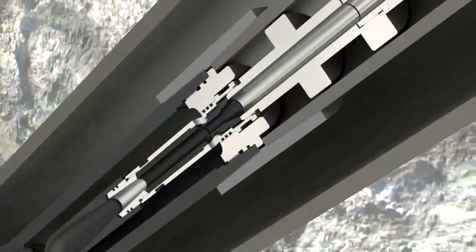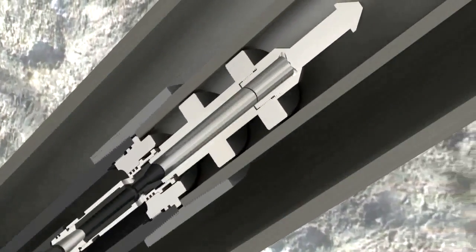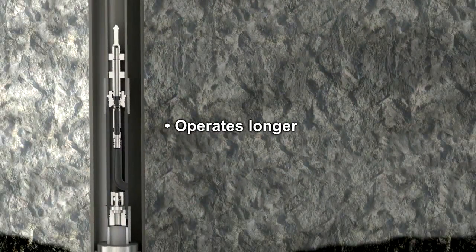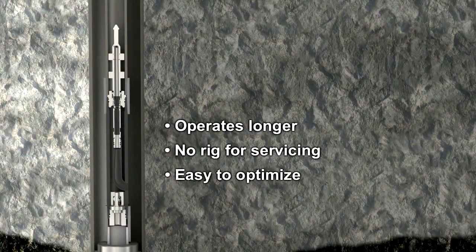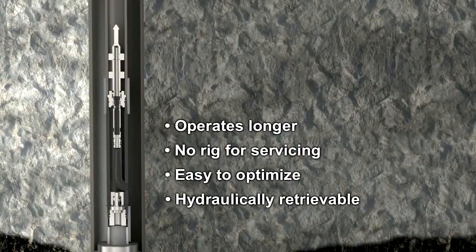With no moving parts, the JJ Tech downhole jet pump operates longer with reduced wear, servicing, and downtime. It needs no rig for servicing, is easy to optimize, and is retrieved to the surface by pumping in reverse.